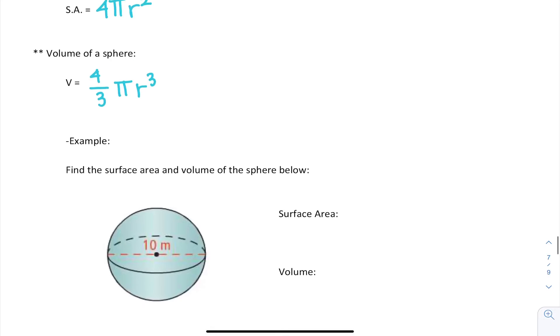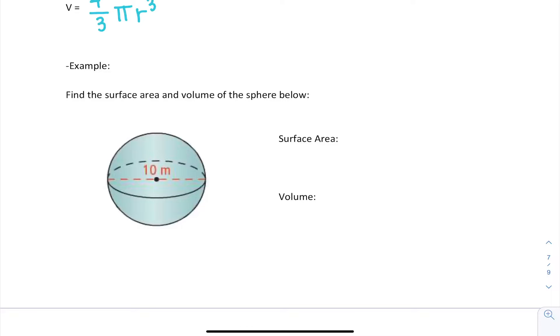So let's try out an example. If we are asked to find the surface area and volume of a sphere, the first thing we want to do is find the radius. It gives us that the diameter is 10 meters, so our radius is going to be half of that, so our radius will be 5 meters.